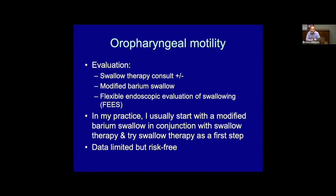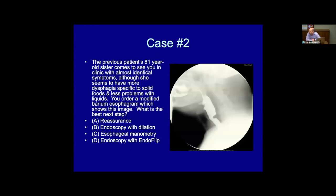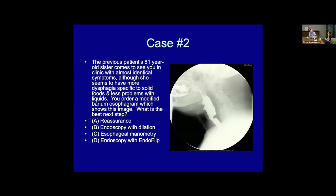Question: given the correlation between muscle mass, grip strength, and oropharyngeal motility, do you see oropharyngeal motility disorders in malnourished or deconditioned patients? Definitely — swallowing involves many muscles, and any muscular dysfunction, whether from deconditioning, aging, or other causes, can create problems.